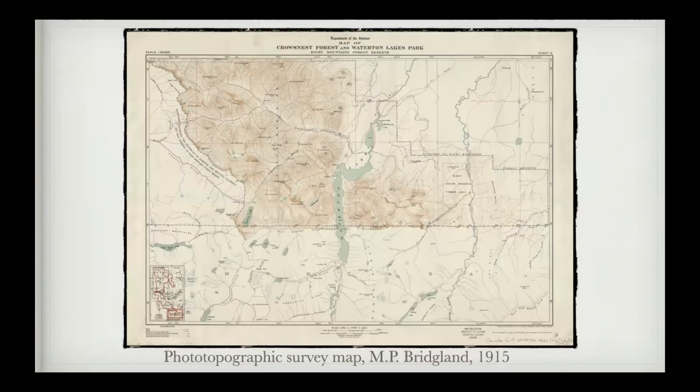This is an example of a map created in 1915 by Morrison Parsons Bridgeland, a prolific surveyor at the time, of the area around Waterton Lakes National Park. What's amazing is that this map made over 100 years ago is actually pretty accurate and comparable with mapping products we see today. By using this phototopographic technique, they were able to produce quality maps — a lot of work, a lot of exercise, but a very good product.